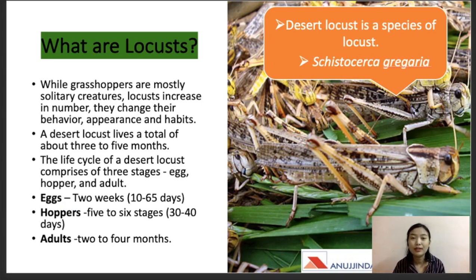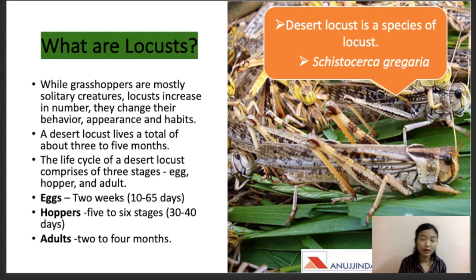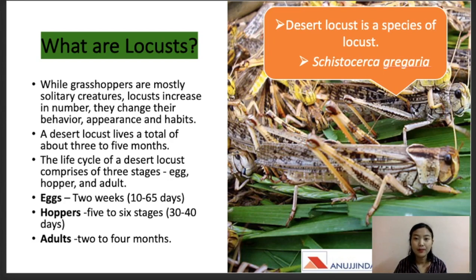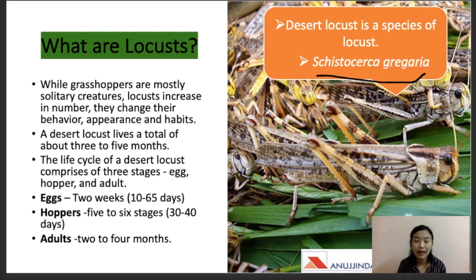First and foremost, we need to understand what locusts are. There are times we get confused with grasshoppers. The locusts we are looking into are known as desert locusts. Grasshoppers are mostly solitary creatures, but what makes locusts different from grasshoppers is that they increase in number due to a change in their behavior, appearance, and habits.